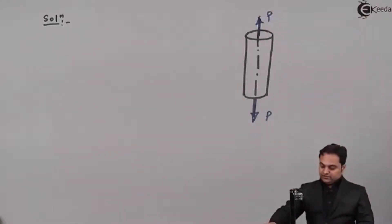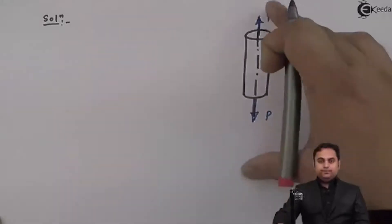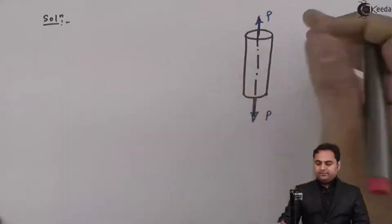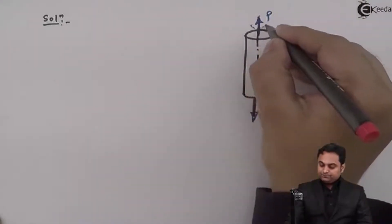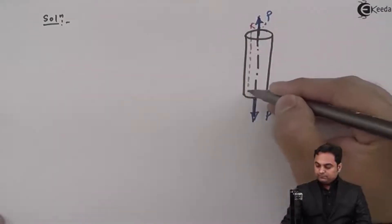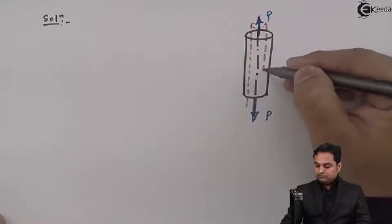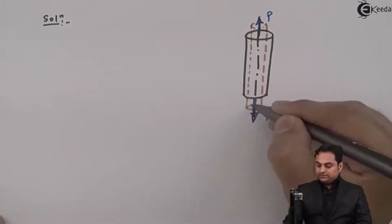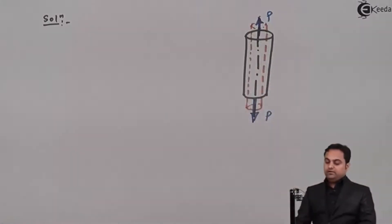So here we have load P acting along the axis and it is tensile. Now because of the action of this tensile load, length will increase, diameter will decrease. So the rod will look something like this.